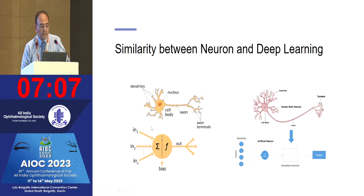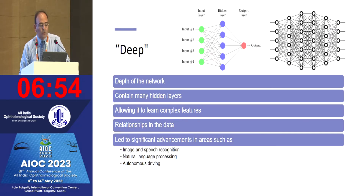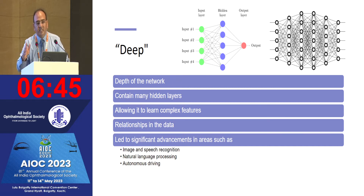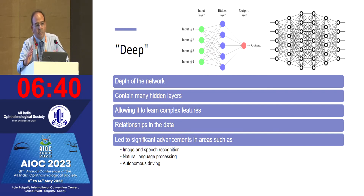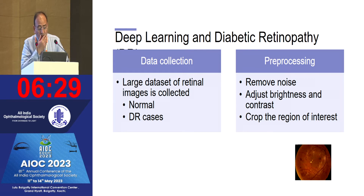The cell body analyzes the message and sends the output. Similarly, in deep learning there is an input which is analyzed — whether it is true or false, acceptable or not — and then an output is given. The term 'deep' refers to the depth of the network, which may contain hidden layers, allowing it to learn complex features and relationships, leading to advances in image recognition, speech recognition, natural language processing, and autonomous driving.